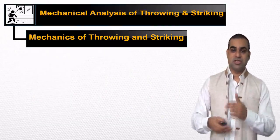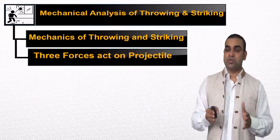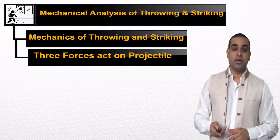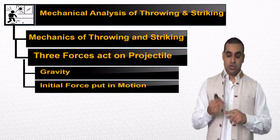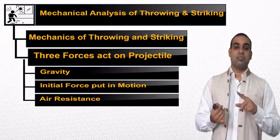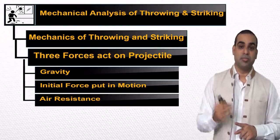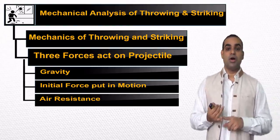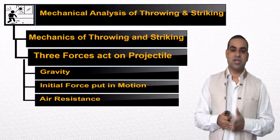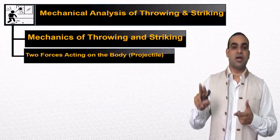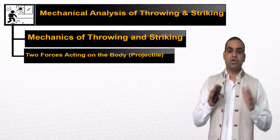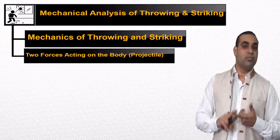Projectile motion — ham isko is tarah se samajhte hain. There are three forces which act in a projectile: the gravity, the initial force so that the object gets moving, and the air resistance — ghrudva karshan, pralambik force jis se object mein gati mil rahi hai, aur vayu pratirodh. If we reduce the air resistance, there are two forces acting on that object to get projected.